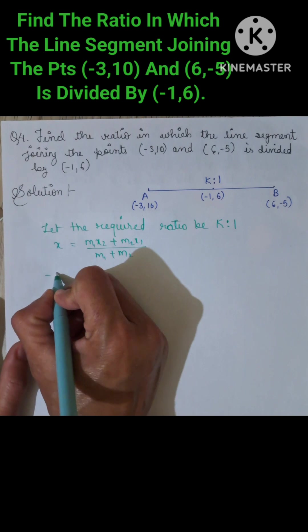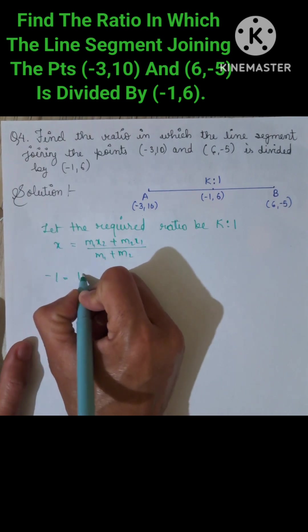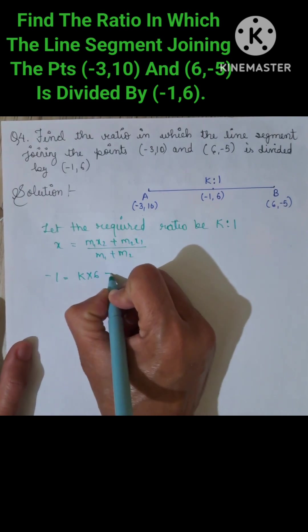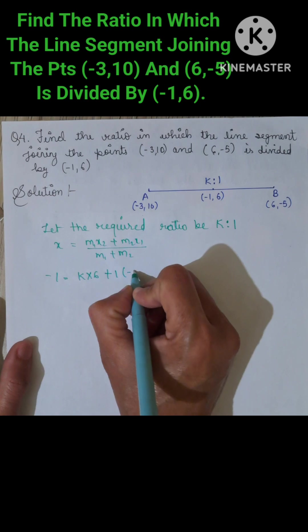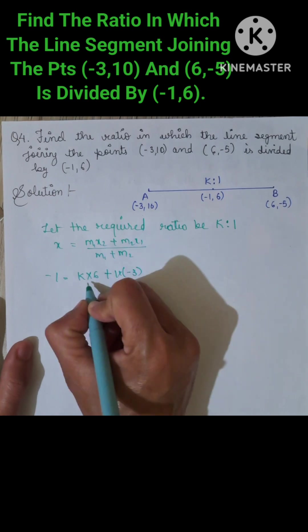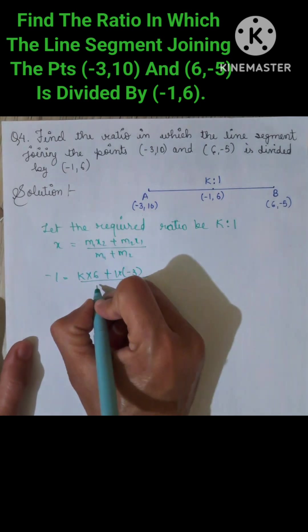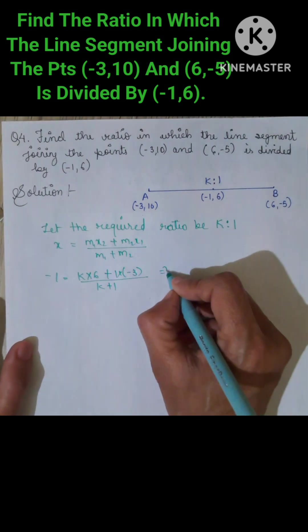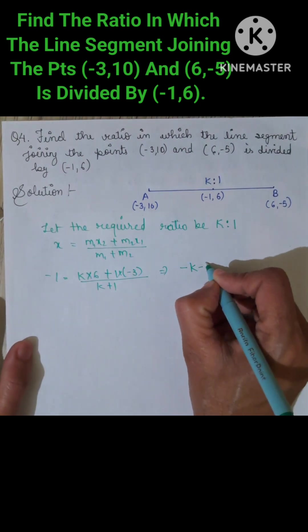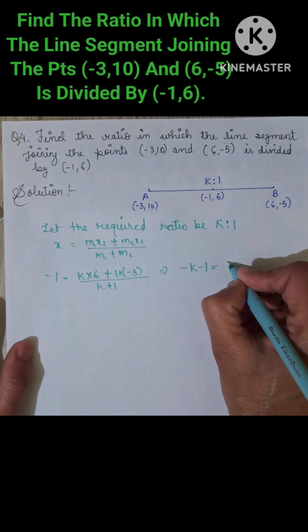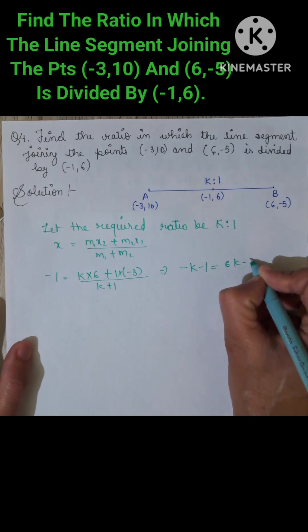Substituting the values, -1 equals (K × 6 + 1 × (-3)) divided by (K + 1). This simplifies to -1 equals (6K - 3) divided by (K + 1). Cross-multiplying gives -(K + 1) equals 6K - 3.